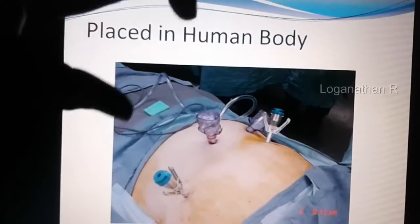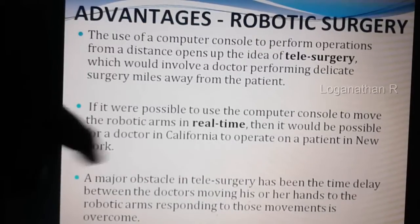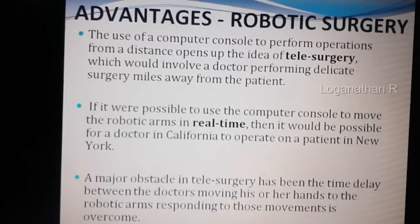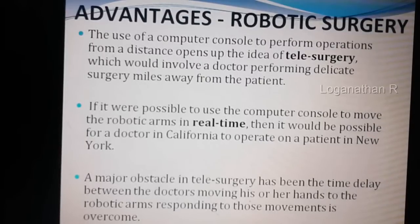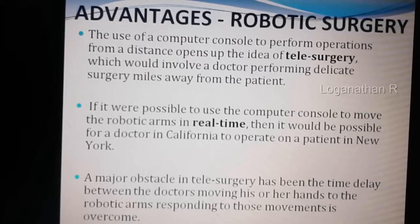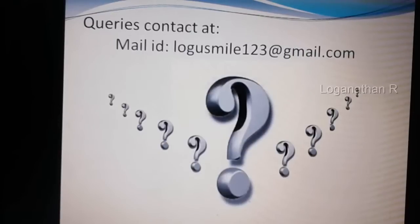This equipment injects different kinds of medicines for the required operations. There is a tube where the camera goes inside the body, and two instruments that can be moved using the joystick. One major advantage is real-time operation: for example, doctors in California can operate on a patient in New York. If the doctor's hand shakes, the robot compensates, making the procedure more stable and precise.